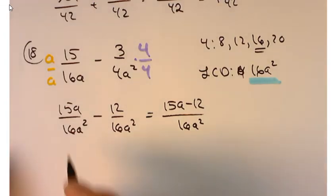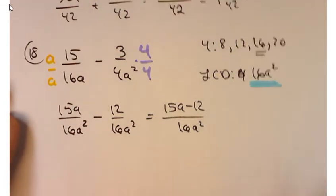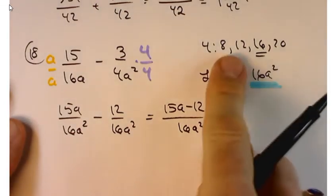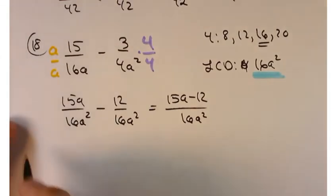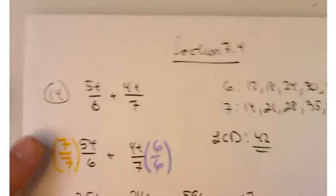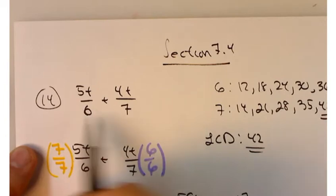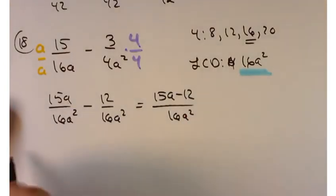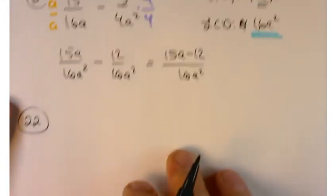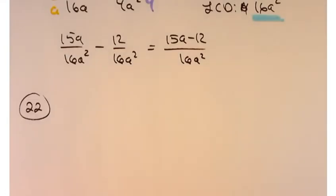Let's move on to problem number 22. Sometimes you'll be able to see the LCD. In the first problem it turned out to be the product of the two denominators, but in this one if you take the product of the two denominators you'll work with an LCD bigger than you need — it'll be more work. So let's follow through our work in finding the LCD.